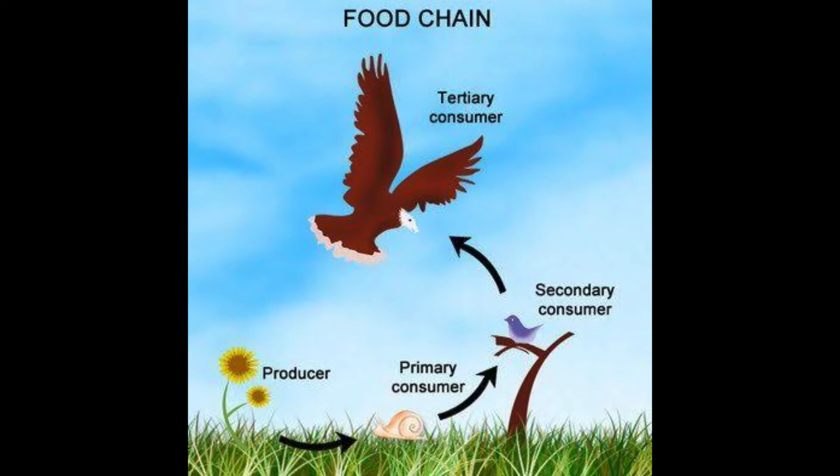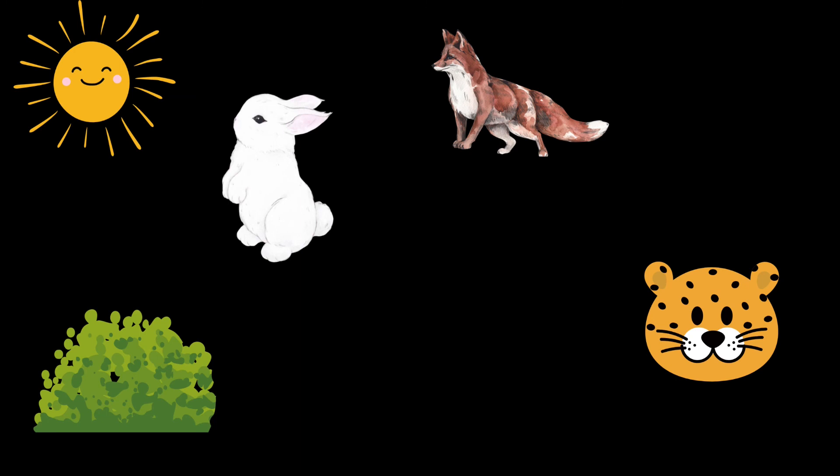To sum up, the food cycle starts with the plants which are producers. Primary consumers will eat the plants whereas the secondary and tertiary consumers will feed on other animals. And at last they all go into the soil with the help of decomposers.